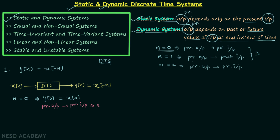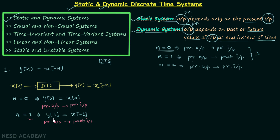You need to check for other values of n also. So let's check when n is equal to 1. n equal to 1 is the present instant and the output we are getting is y[1], which is the present output, and we will have x[-1]. The present output is depending on the past input, because the present instant is 1 and compared to 1, minus 1 is the past value. Therefore the input is the past input, and present output depending on the past input means the system is dynamic.